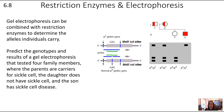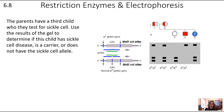The daughter has two copies of the HbA allele — normal hemoglobin — which was cut into two fragments, so you can see two bands in her gel column. The son has two copies of the HbS allele, which produces only one fragment, so there is just one band. The parents are carriers with one of each allele — one allele stays as one big fragment and one is cut into two smaller fragments — so carriers show three different bands.